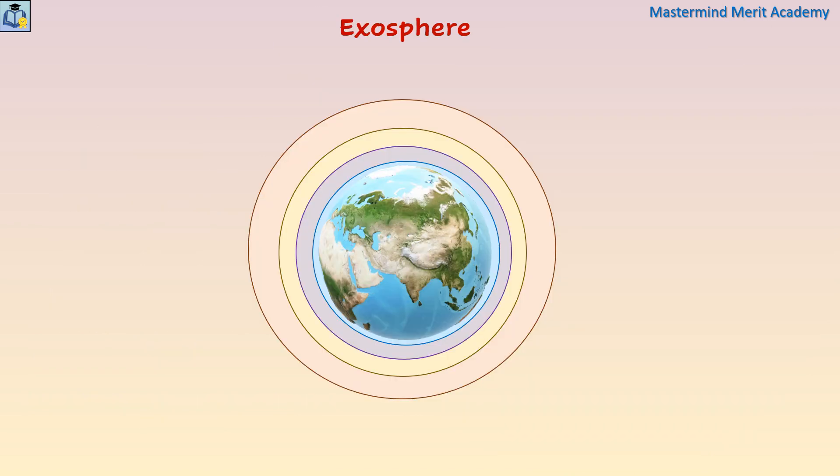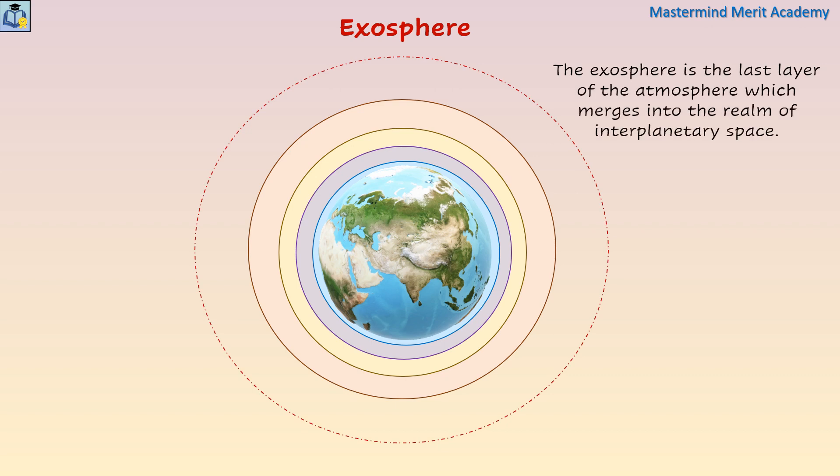The exosphere is the last layer of the atmosphere which merges into the realm of interplanetary space. It contains mainly oxygen and hydrogen atoms. But there are so few of them that they rarely collide and some of them escape right out into space.